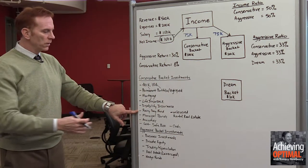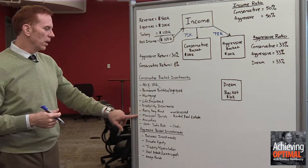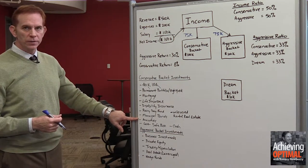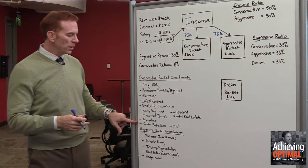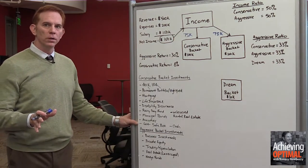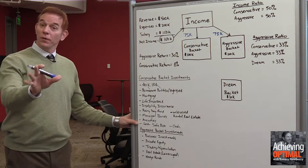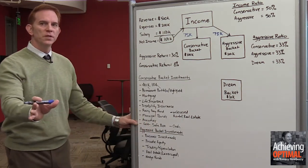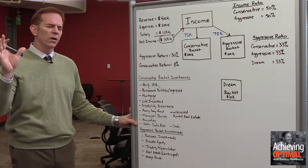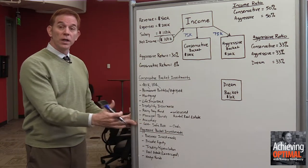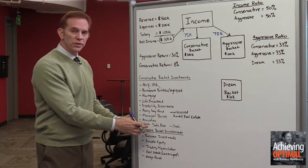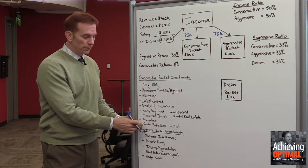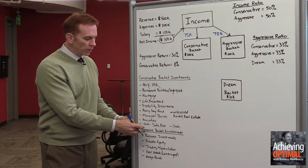Also in the conservative bucket: a rainy day fund — six months to a year of reserve cash — municipal bonds, which are tax-free bonds that pay low rates of return, and annuities. One thing we didn't talk about on the podcast but is really important is physical gold. A topic for another podcast is the concept of a safe box — your doomsday box. If everything went crazy, something like a government collapse, you'd go to your safe box. In it you'd have things like gold coins, silver coins — physical bullion, physical gold coins — all sitting in your conservative bucket.